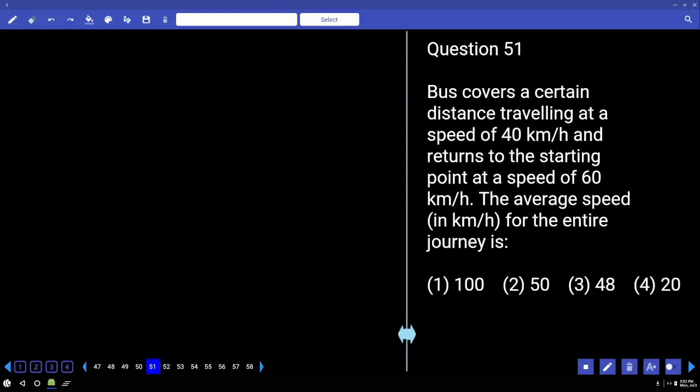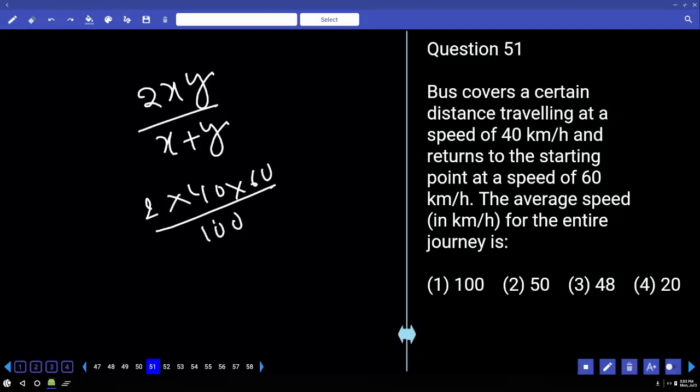Very very easy paper. Nothing in this paper. Just read the first one. A bus covers a certain distance traveling at a speed of 40 and returns to the starting point with a speed of 60. Find the average speed for the entire journey. Now in order to find the average speed, apply the formula or shortcut 2xy by x plus y. 2 into 40 into 60 by 100.